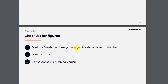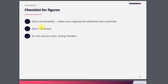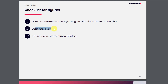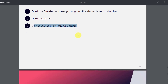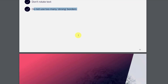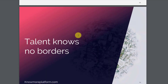Checklist for figures: don't use SmartArt — it's a big no-no, but if you want a particular element from it, you can ungroup it and use only that part. Don't rotate text — it should only be horizontal for easiest reading. Do not use too many strong borders — strong borders should only be used on elements where you want to place focus.